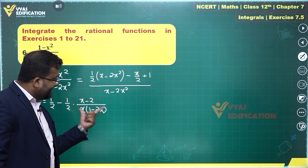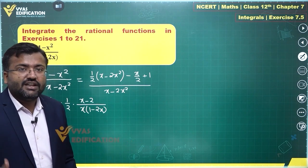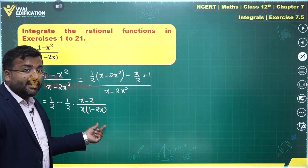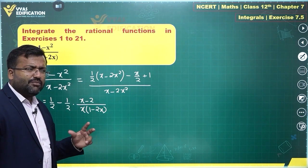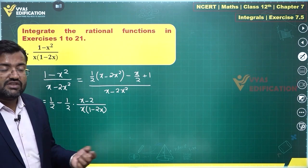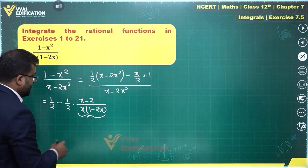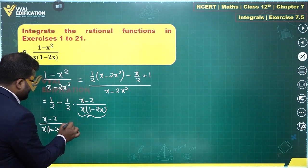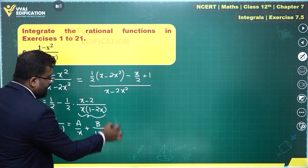To find the integral of this expression, we'll write it as a sum of partial fractions. We could have used the linear-upon-quadratic approach by converting the denominator into a perfect square and writing the numerator as A times the differential coefficient of the denominator plus B, but that approach is slightly longer than partial fractions. So we'll prefer the partial fractions approach. The expression x minus 2 over x times 1 minus 2x is written as A upon x plus B upon 1 minus 2x.